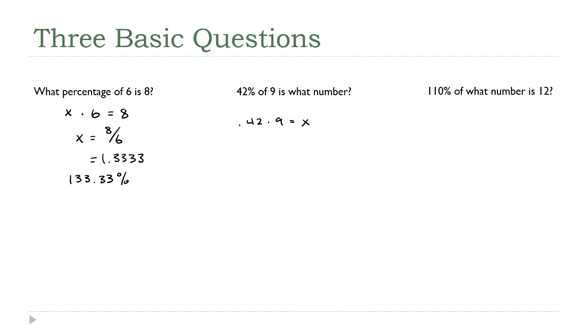That's going to be x. There's really no solving for this one per se, all I'm going to do is the arithmetic: 0.42 times 9 is 3.78. That's it, there's my answer.